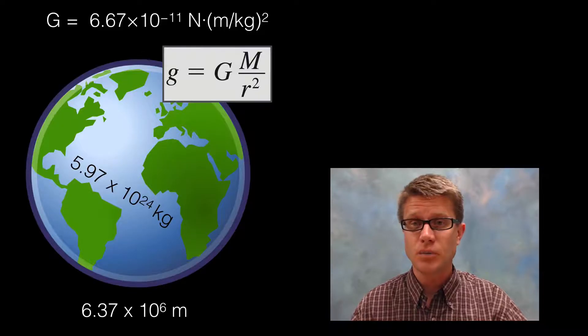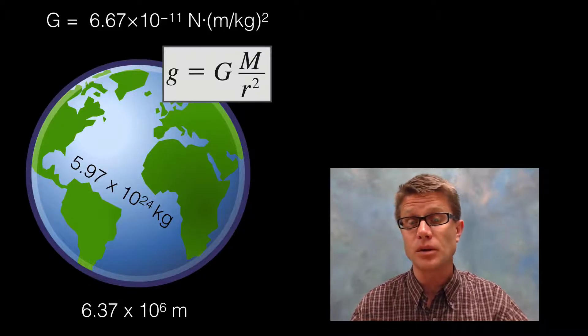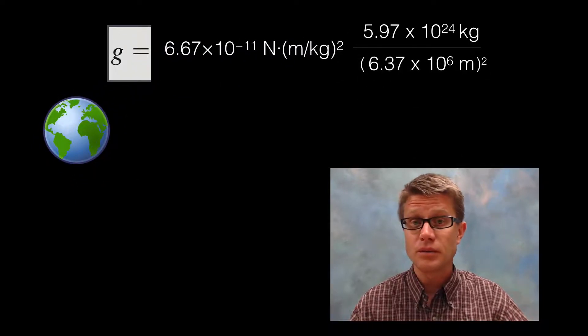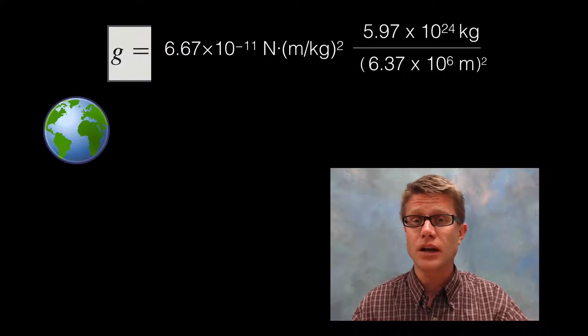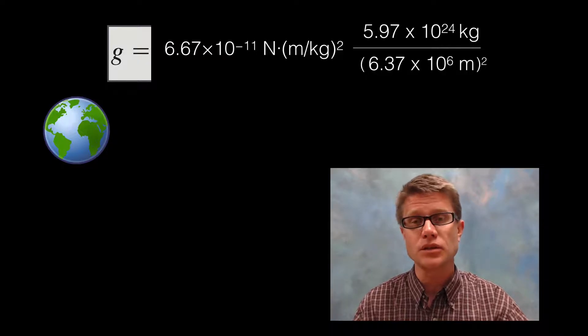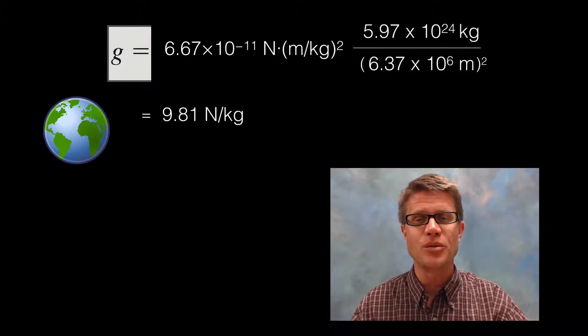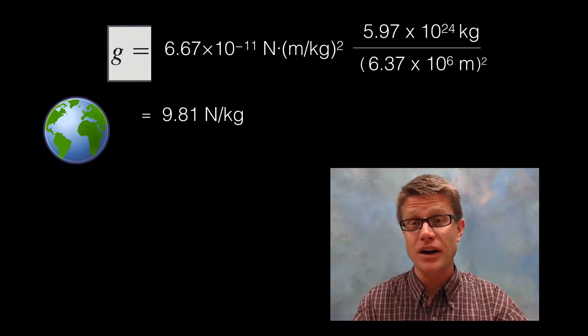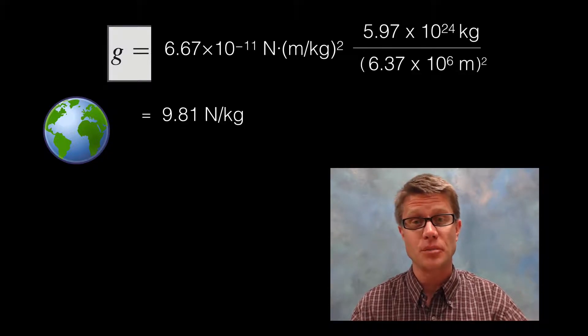To solve this problem you're going to do the same exact thing. We're going to plug those values into the equation. And again it's worth doing. But if you do this you're going to get a value that you've seen before. The gravitational field strength is going to be 9.81 newtons per kilogram.